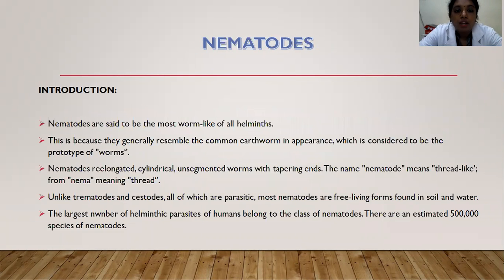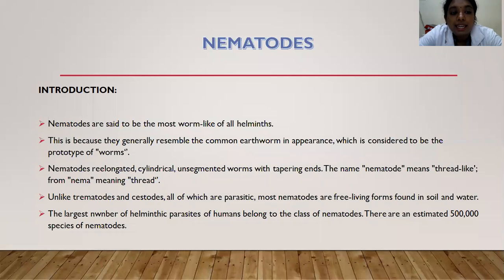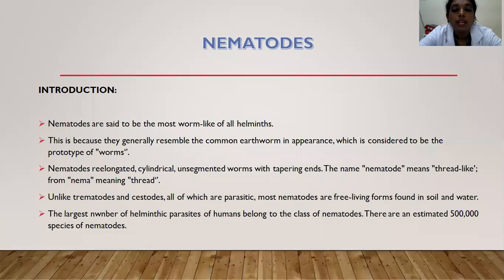Today I will be talking about nematodes. Nematodes are said to be the most worm-like of all helminths because they generally resemble the common earthworm in appearance, which is considered to be the prototype of a worm. Nematodes are elongated, cylindrical, unsegmented worms with tapering ends. The name nematode means thread-like — nema means thread. Unlike trematodes and cestodes, all of which are parasitic, most nematodes are free-living forms found in soil and water.